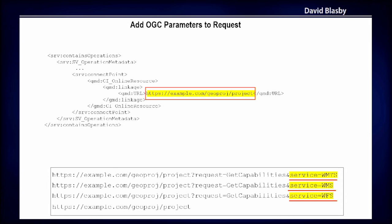Pop quiz: that's a typical service link and there are four possible requests at the bottom — for WMS, WFS, WMTS, and an Atom feed. They're all different, so how do you know which of those four requests to make? The answer is basically you don't really know, but you can look around the document for some context.